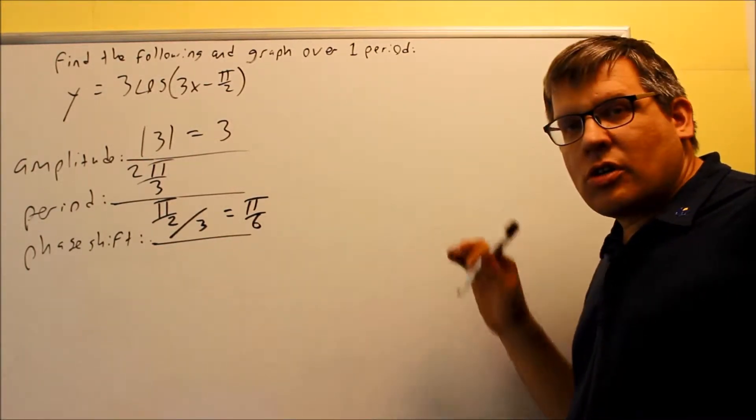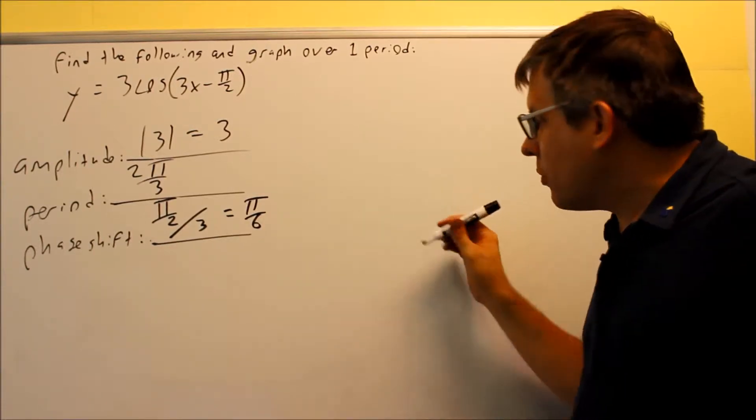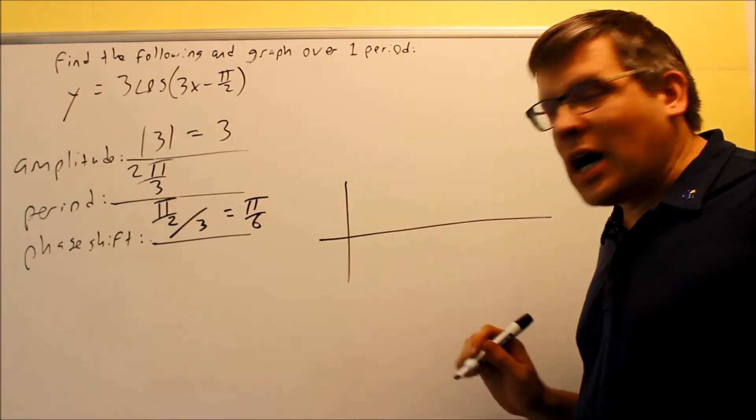Now, in order to get the numbers that are on the graph itself, I have to use the quarter point. But let's take a look first of all at what we have so far. My phase shift is π over 6.